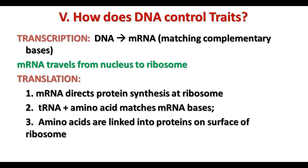The messenger RNA leaves the nucleus and travels to the ribosome, where the next part of the process occurs: translation. Translation means changing from one language to another — basically, we're changing from the language of bases, nucleotides, and codons in the DNA and RNA to the language of amino acids in the proteins. Transfer RNA moves into place and brings the amino acids to match up to the codon on the messenger RNA. When the amino acids are next to each other, they're linked together into proteins on the surface of the ribosome by peptide bonds, formed by dehydration synthesis, which we learned about earlier.